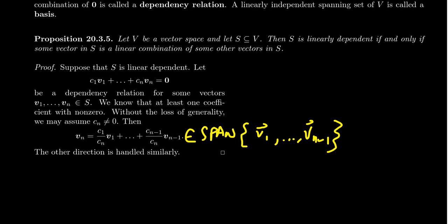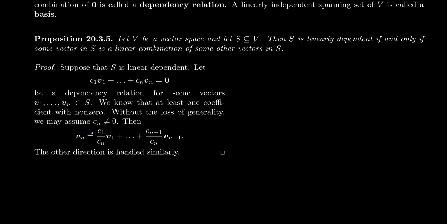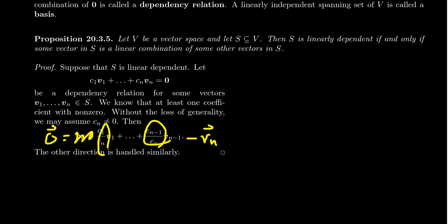The other direction is even easier because you don't have to divide by anything. If some vector Vn is a linear combination of the others, moving Vn to the other side gives you zero equals this combination minus Vn. That's a non-trivial linear combination since Vn has a non-zero coefficient of negative one. This direction doesn't even require you to be in a field. So that completes this very useful proposition: a set is linearly dependent if and only if at least one vector is a linear combination of the others.